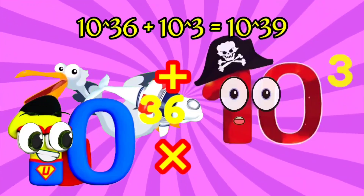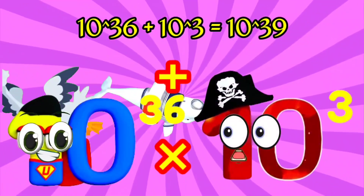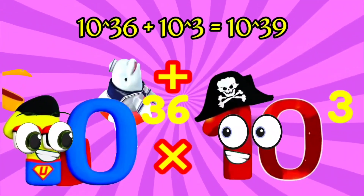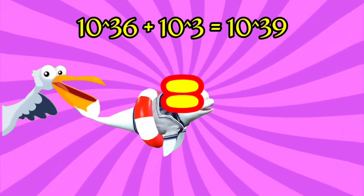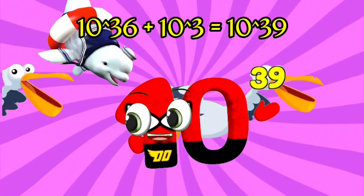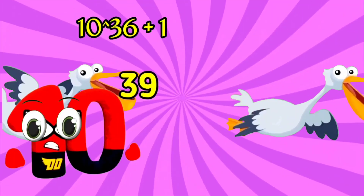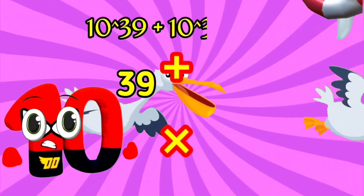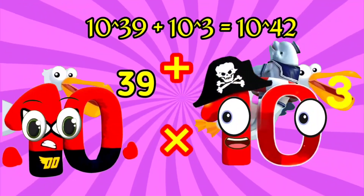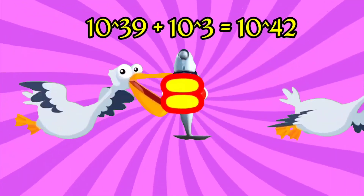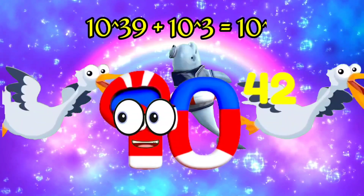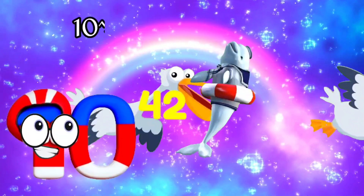Nine Tremate. I'm One Thousand, and I've got three zeros. Equals. I'm Tredecillion, and I have 39 sticky zeros. Nine Tremate. I'm One Thousand, and I've got three zeros. Equals. I'm Tredecillion, and I have 42 speedy zeros.